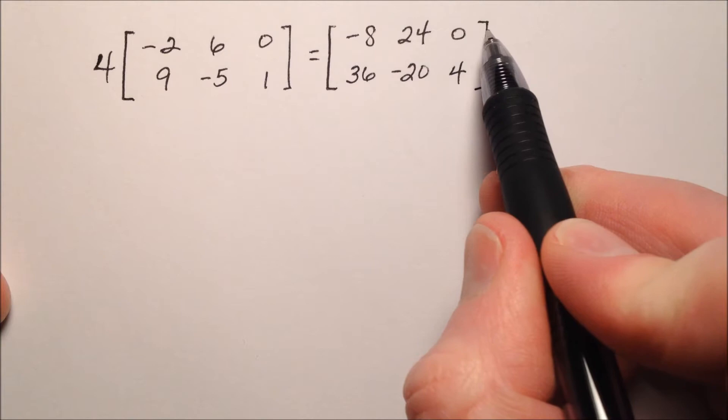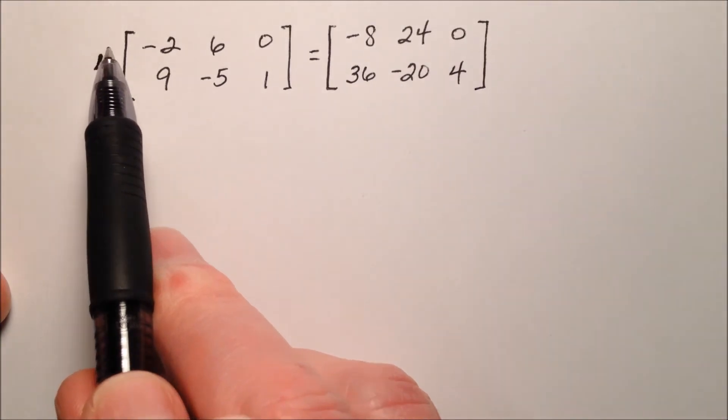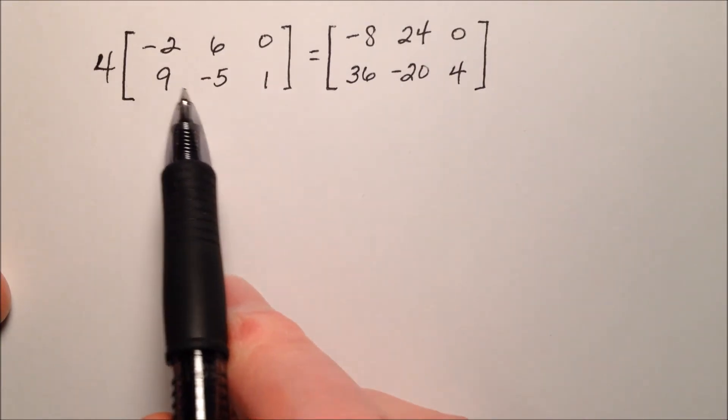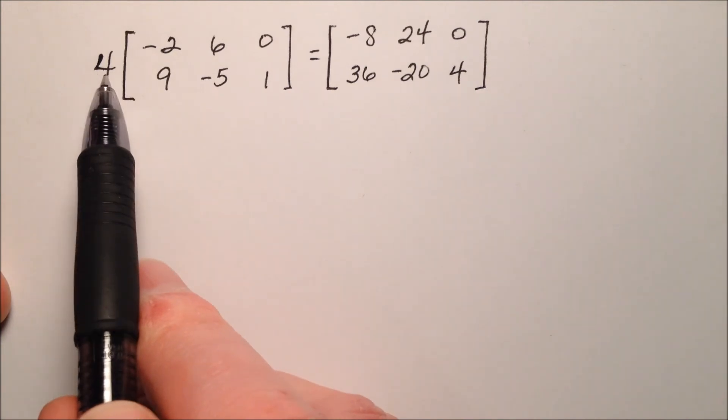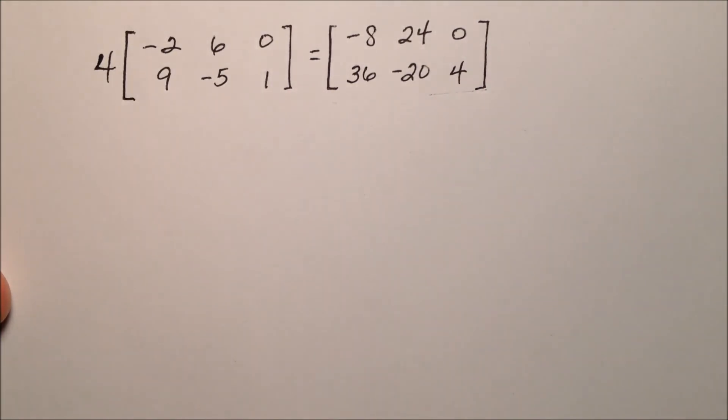I'm going to go ahead and close up that matrix. So when I use scalar multiplication, I'm going to scale this matrix by a factor of 4, and when I do so, I get this matrix.